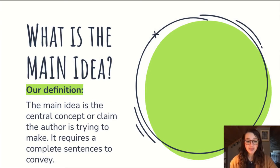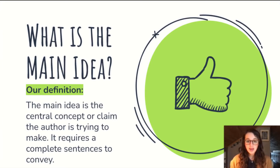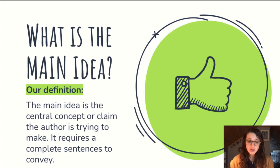So what is the main idea? The main idea is the central concept or claim the author is trying to convey. It requires a complete sentence to convey — it's a full complete thought. So instead of saying 'this article is about earthquakes,' you might say 'the author is trying to get me to understand that earthquakes can be really dangerous for communities that live along fault lines.' It's a much more specific answer.